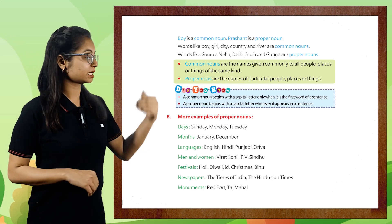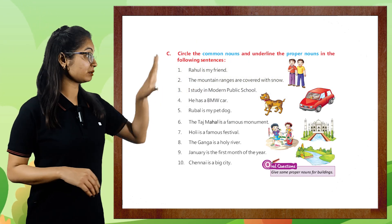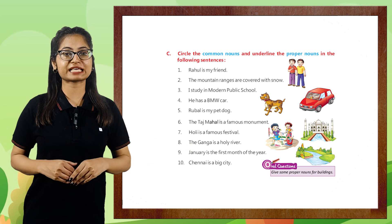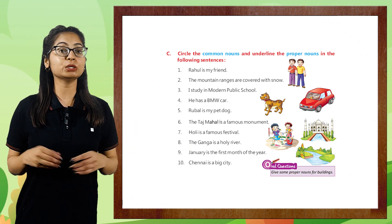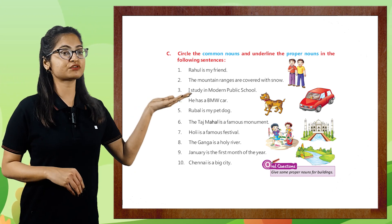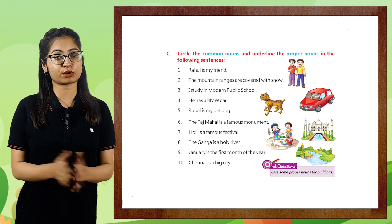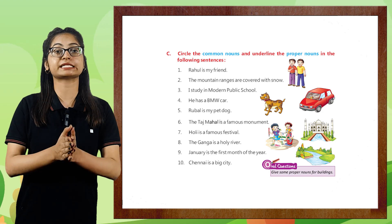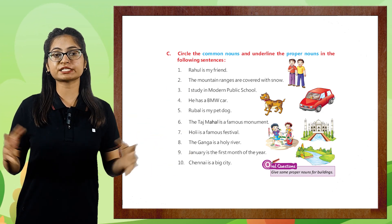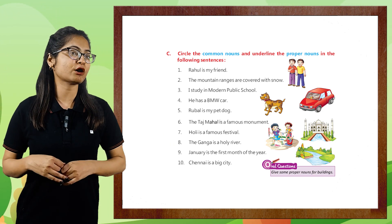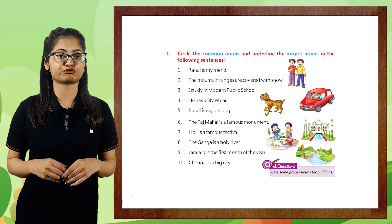Let's talk about monuments: Red Fort, Taj Mahal. Now, circle the common nouns and underline the proper nouns in the following sentences. 'Rahul is my friend.' When we talk about Rahul, it is a specific name, so Rahul is a proper noun — we will underline Rahul. When we talk about 'friend,' friend is a common noun — we will circle friend.